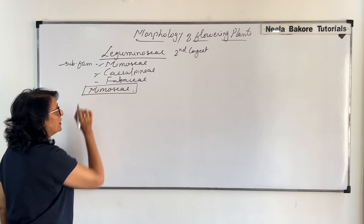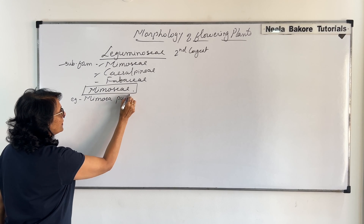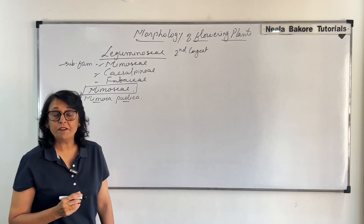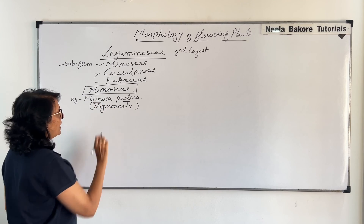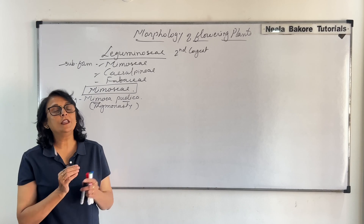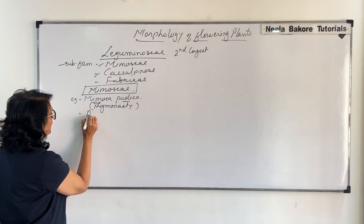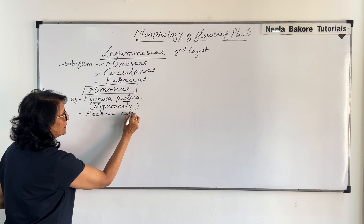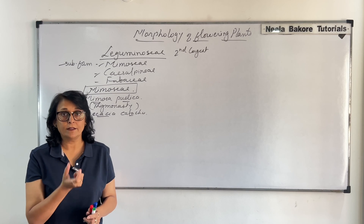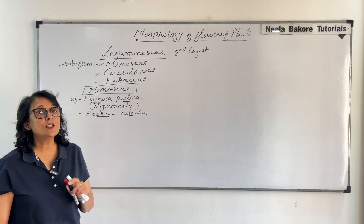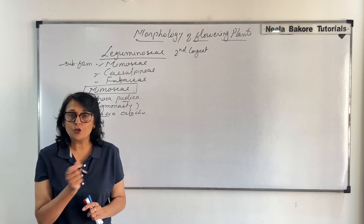Let us first talk about Mimosae. The first example is Mimosa pudica, that is the touch-me-not plant, which shows thigmonasty — a thigmonastic movement that is a response to touch, where all the leaflets close. The second example is Acacia catechu. Catechu is actually the tannin obtained from this plant, used on betel leaves — that is paan — and in Hindi it is known as Katha.